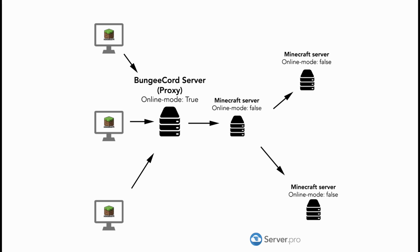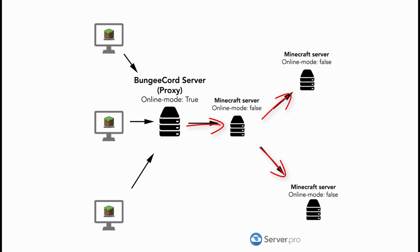The easiest way to describe it is with this diagram. Here you have the BungeeCord server, which forwards the player onto a hub or lobby server. From there, the player will be able to connect to different servers such as the Factions or Kit PvP server without having to log out and log back in with a different IP address — they'll be able to do it in-game with commands or through portals.